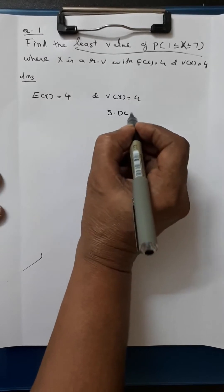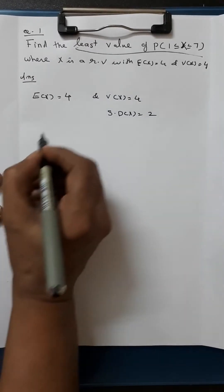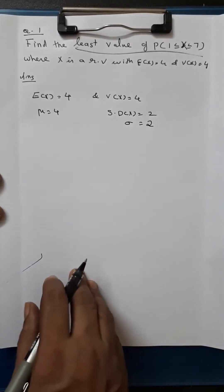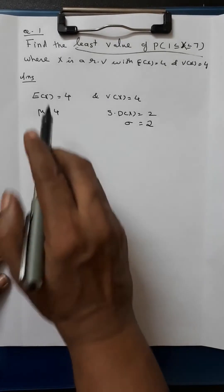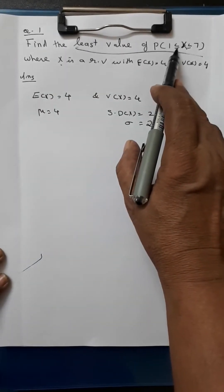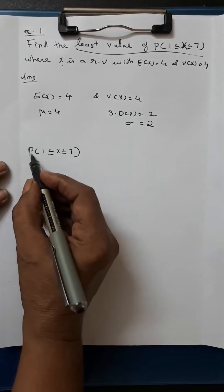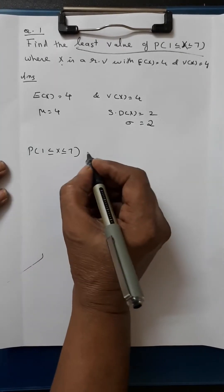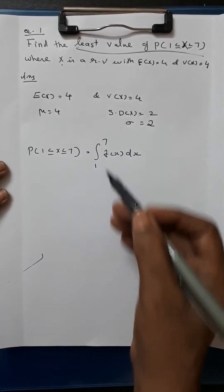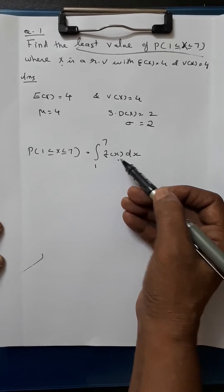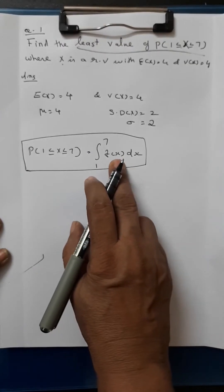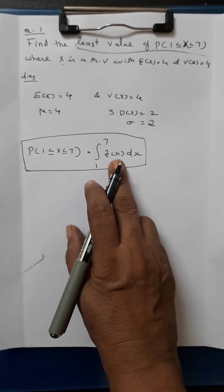That means standard deviation of x equals 2. Therefore, mu = 4 and sigma = 2. Since the form of the random variable is not given, for finding the probability we would need P(1 ≤ x ≤ 7) = integral from 1 to 7 of f(x)dx. But f(x) is not given, so we cannot approach in this way. Since f(x) is not given, we can apply Chebyshev's inequality.